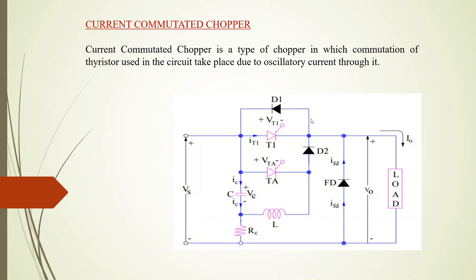This is the circuit diagram of the current commutated chopper. VT1 is the main thyristor, VTA is the auxiliary thyristor, and C and L form the oscillatory circuit. This auxiliary circuit is where the auxiliary thyristor is responsible for the commutation of the thyristor. D1 and D2 are the diodes which freewheel the circulating currents, and FD is the freewheeling diode connected across the load.